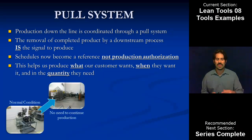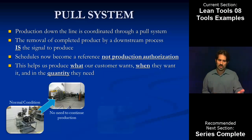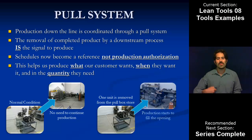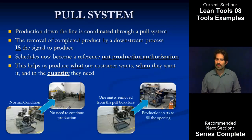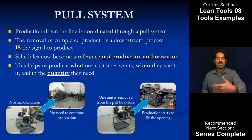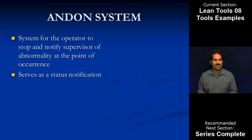Here's a simple review of that: normal condition with two units, no need to produce. One of the units is removed, and now we can start producing to replace it. That method of communication — removing a product as a method of communication — triggers and controls production.